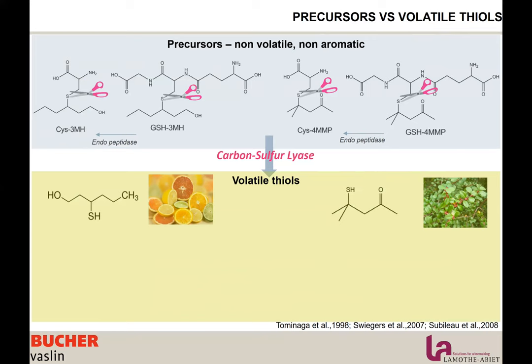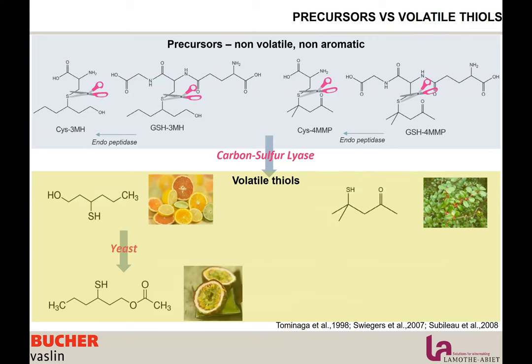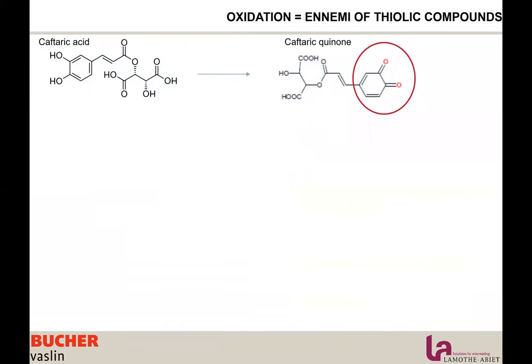We find back our 3-MH and 4-MMP. The acetate arrives from the esterification of 3-MH by the yeast to produce acetate 3-MH. So we have our three thiols. The main risk of losing these thiols is oxidation — they are very sensitive to oxygen and can be oxidized and lost quite easily.